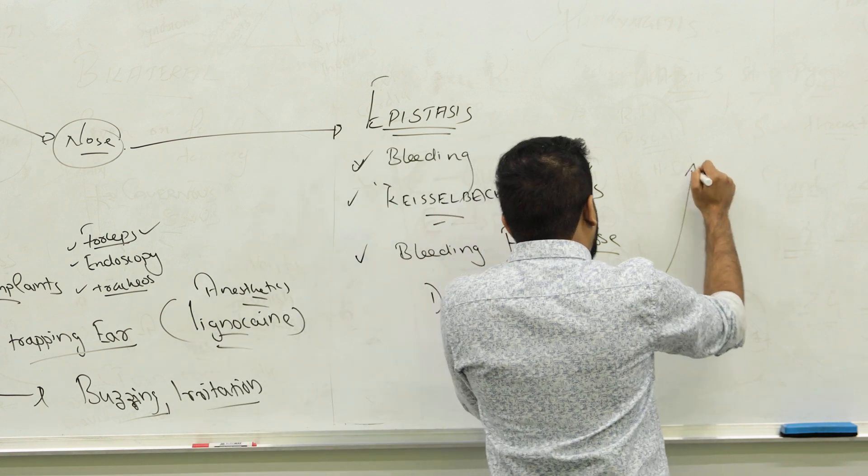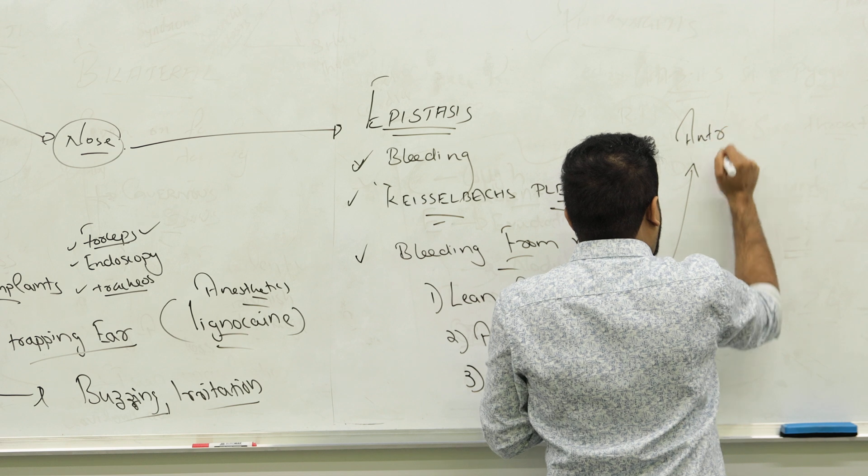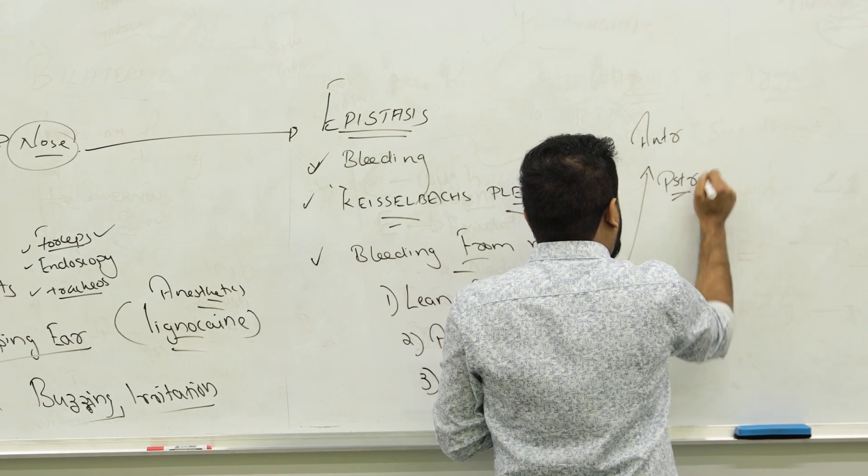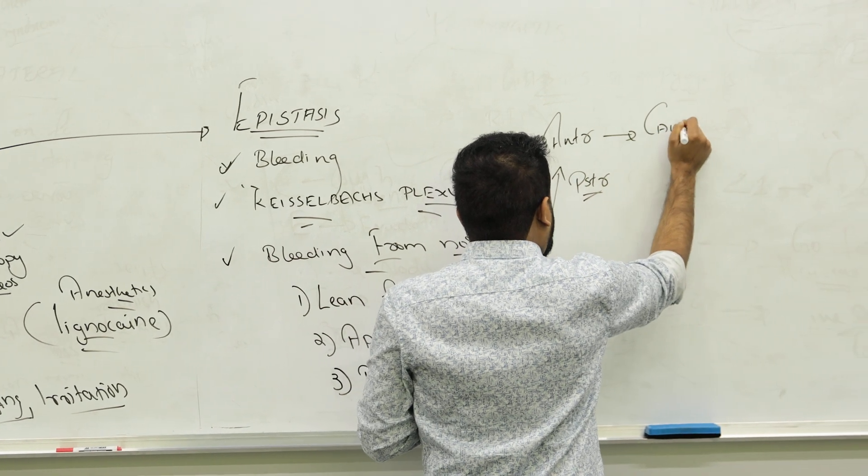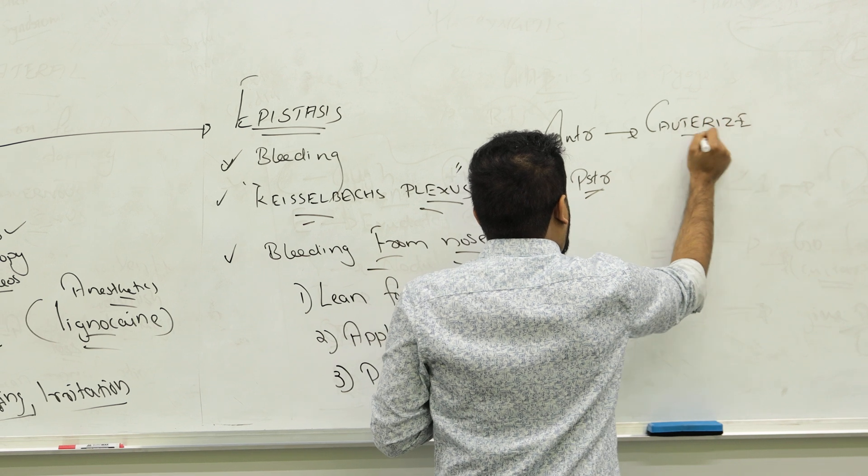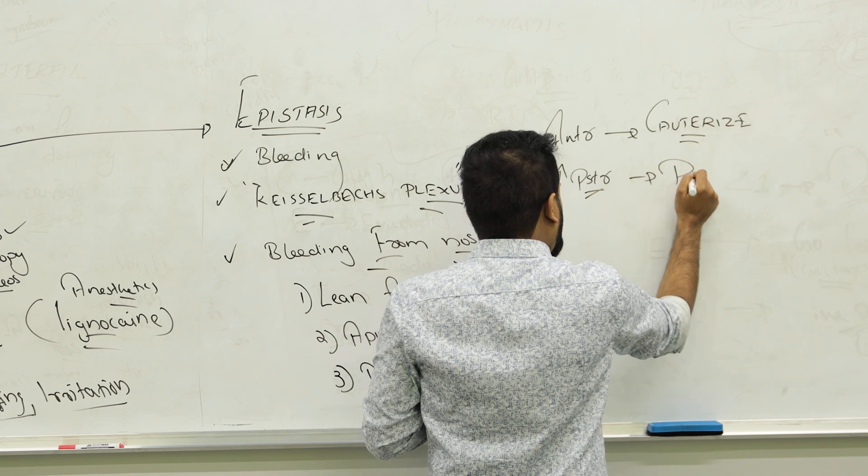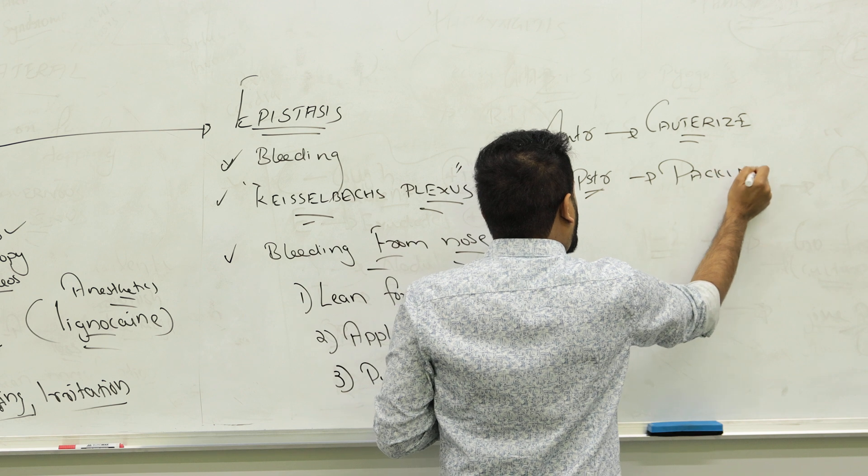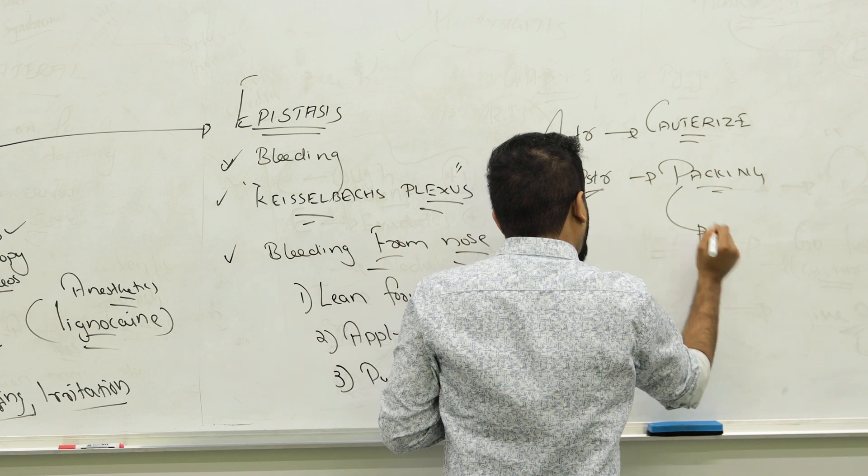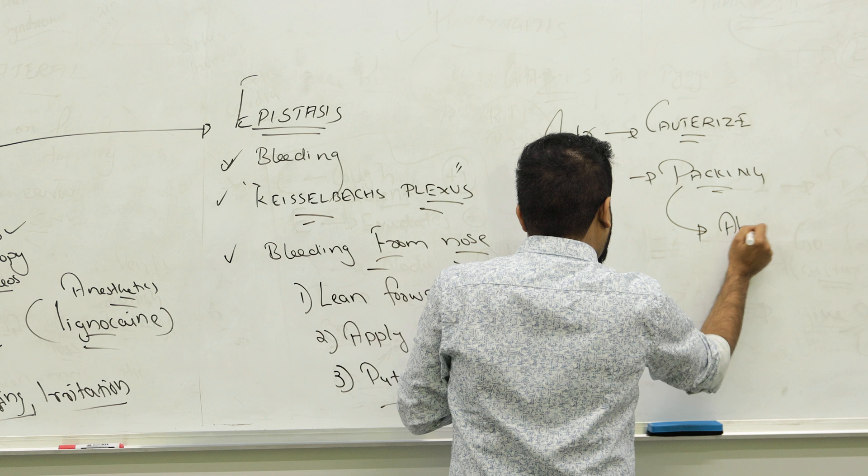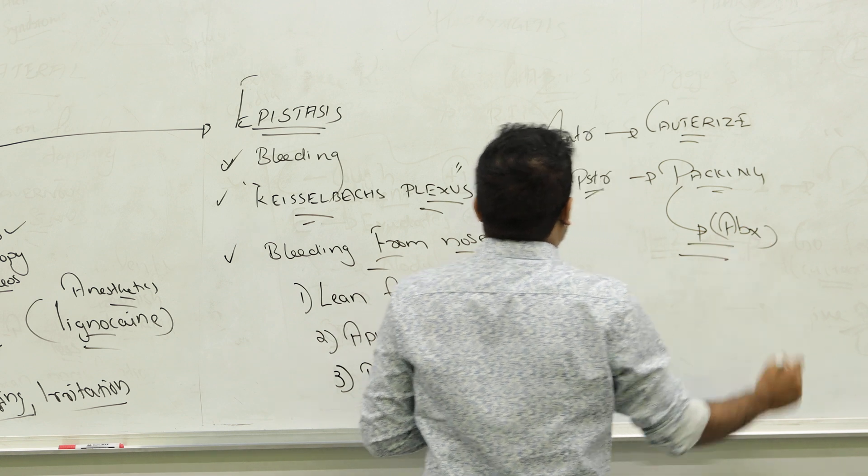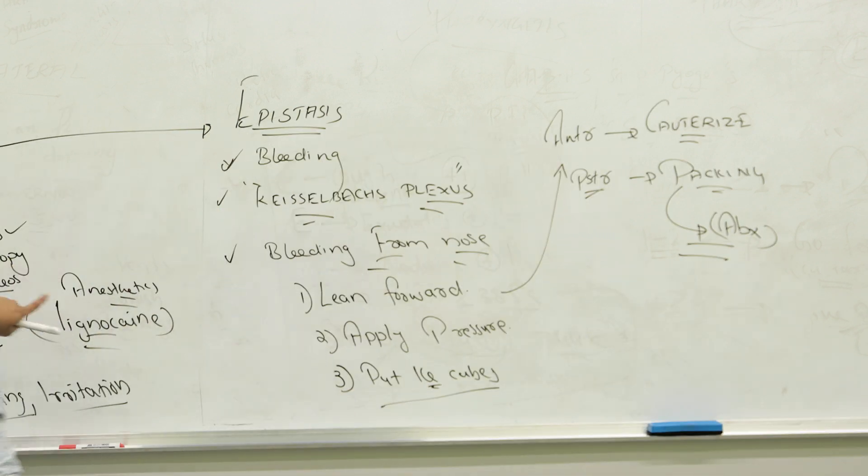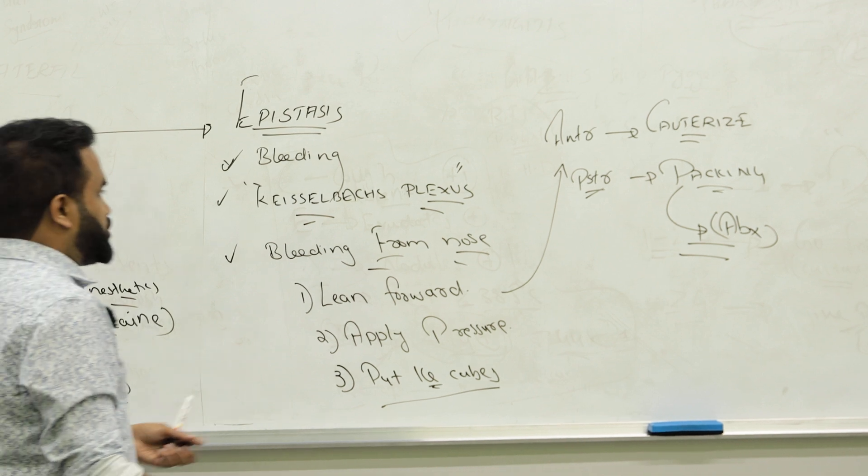After giving first aid, you find out is it anterior part bleeding or posterior. If it is anterior, nothing else. You have to cauterize. The ENT surgeon will cauterize it. Posterior just to give packing. But remember packing can cause infection. So follow up. Give them antibiotics. Don't forget to give antibiotics. So that is the most common thing seen. Epistaxis and ear infection.